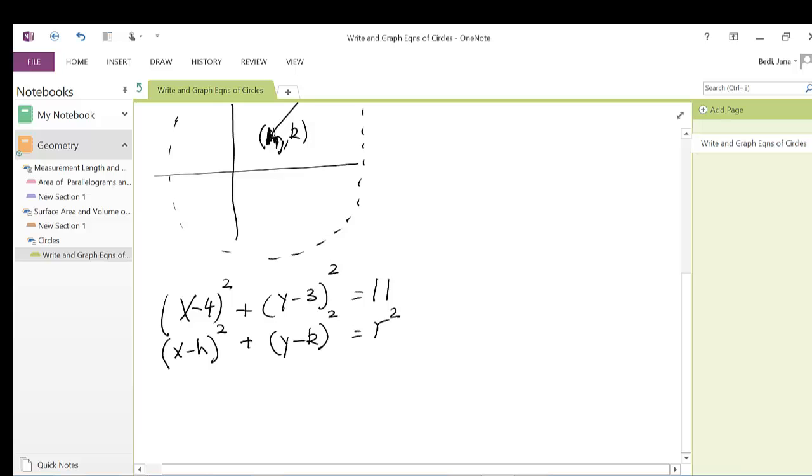This is called the standard equation, where h and k are the coordinates of the center of the circle. So if I match it up, I get h = 4. And let's make this a plus. And k = -3. And r² = 11, which means r = √11. And since this is a radius, it has to be a positive number, so r = √11.